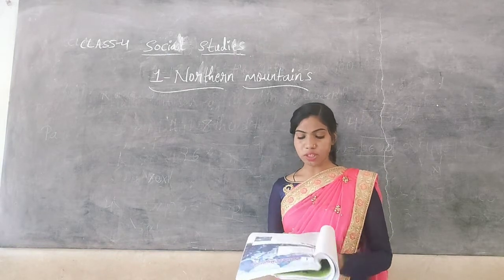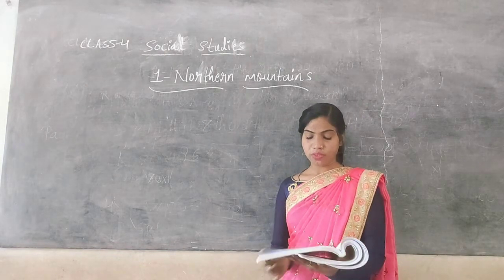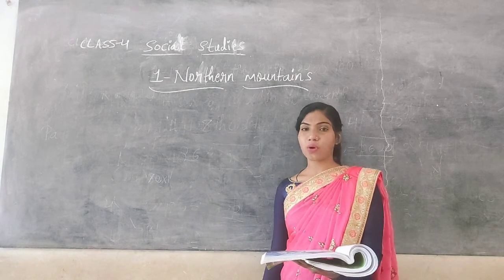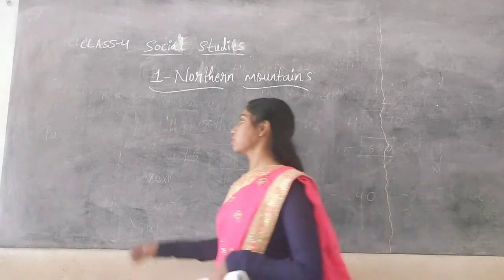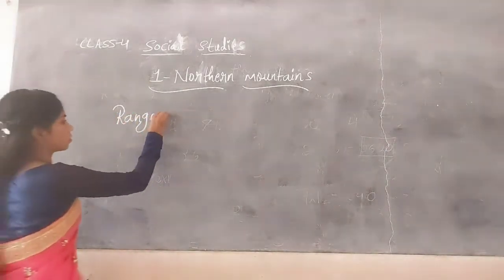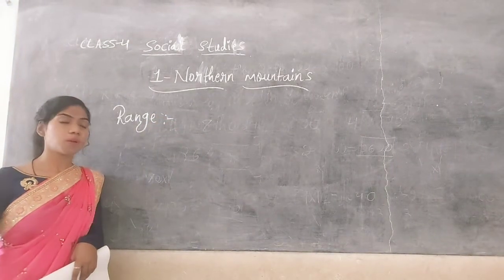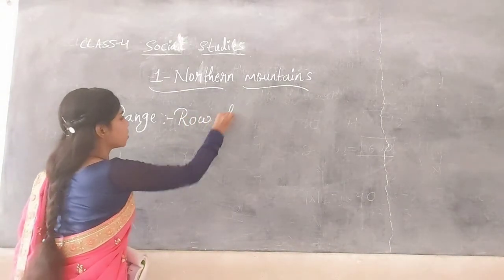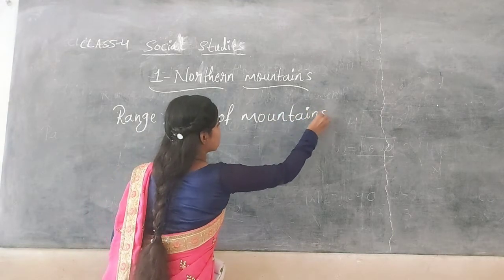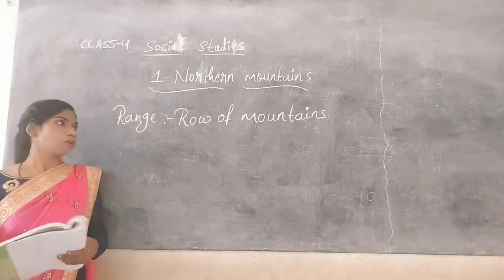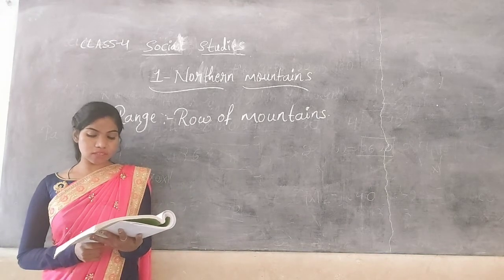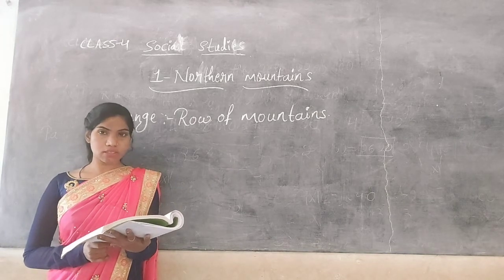The Himalayas range is the highest mountain range in the world. So what do we mean by 'range' here? Range means a row of mountains. So a row of mountains is called a range. The Himalayas range is the highest mountain range in the world.